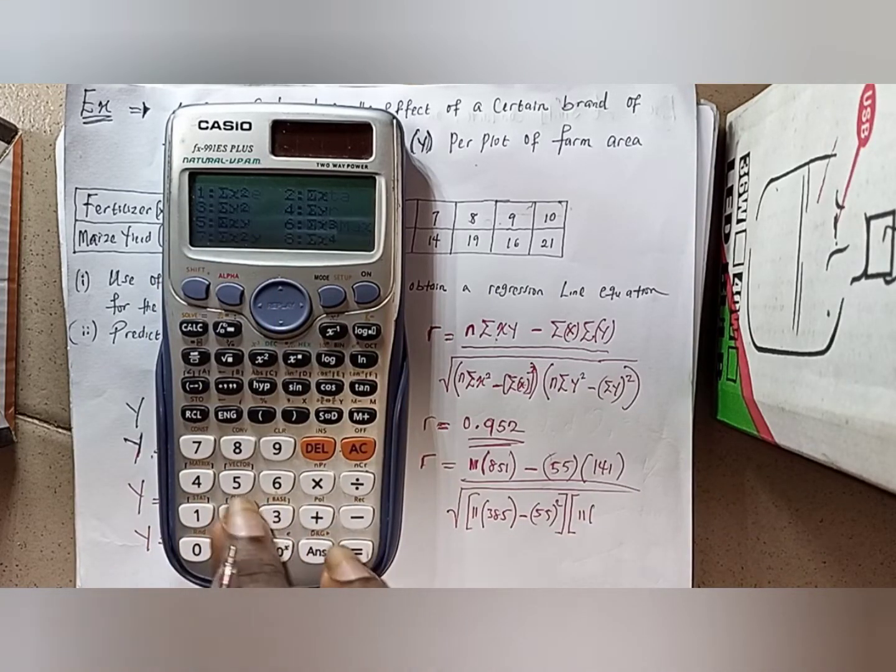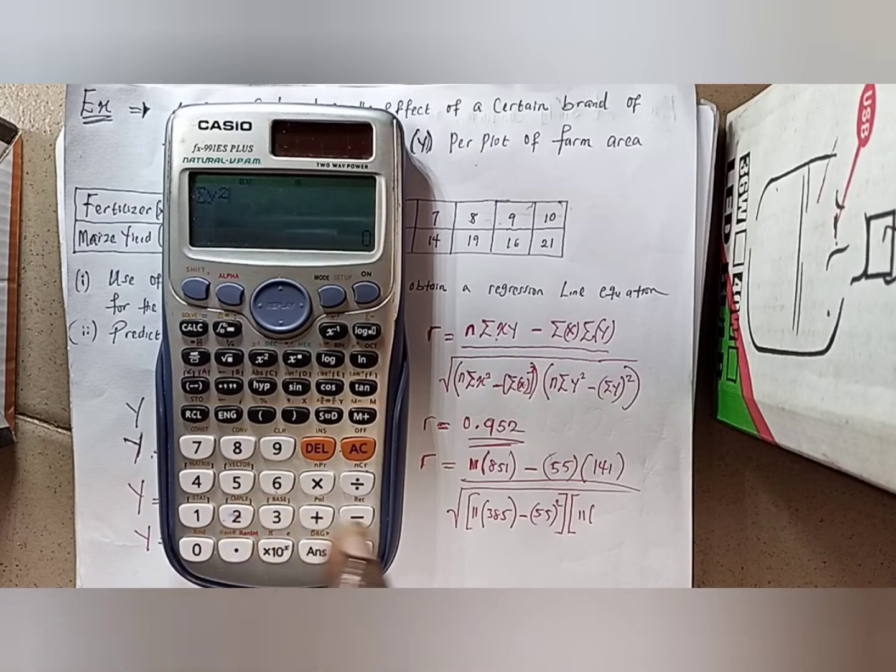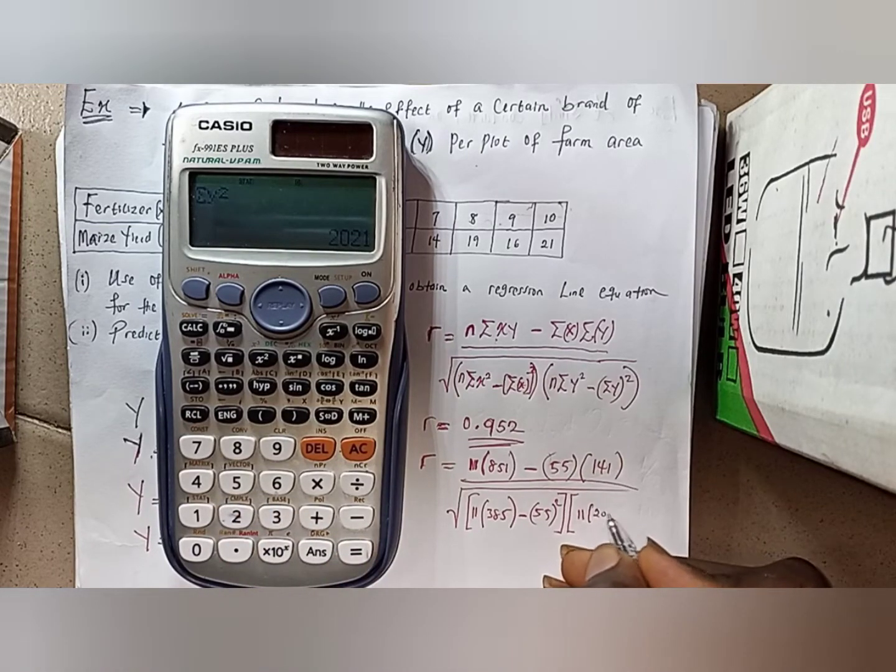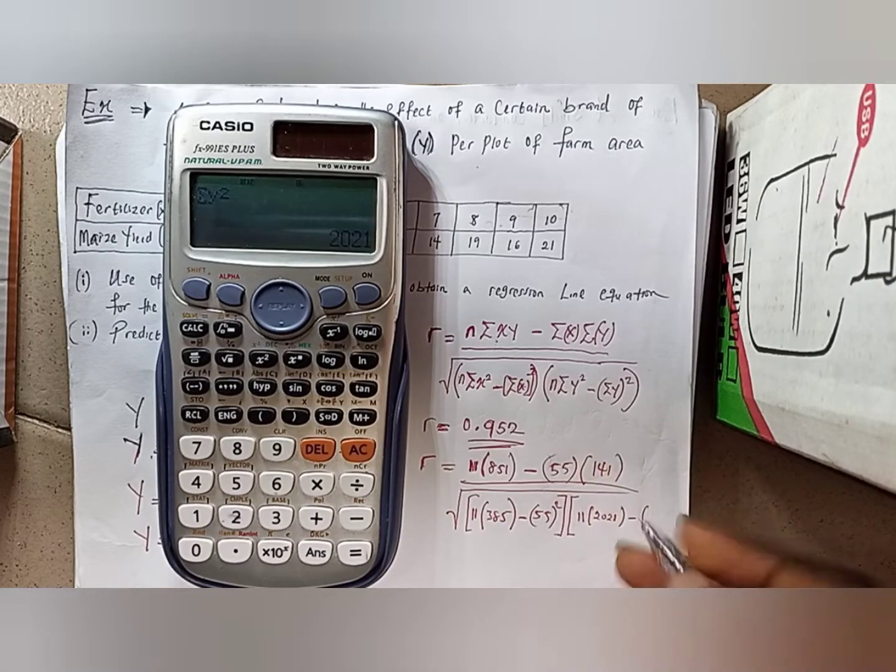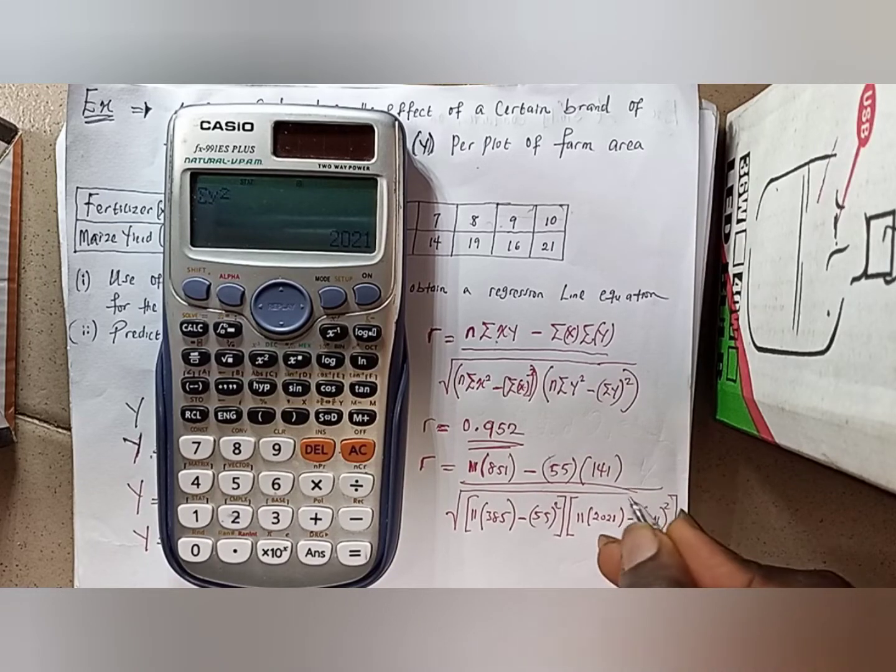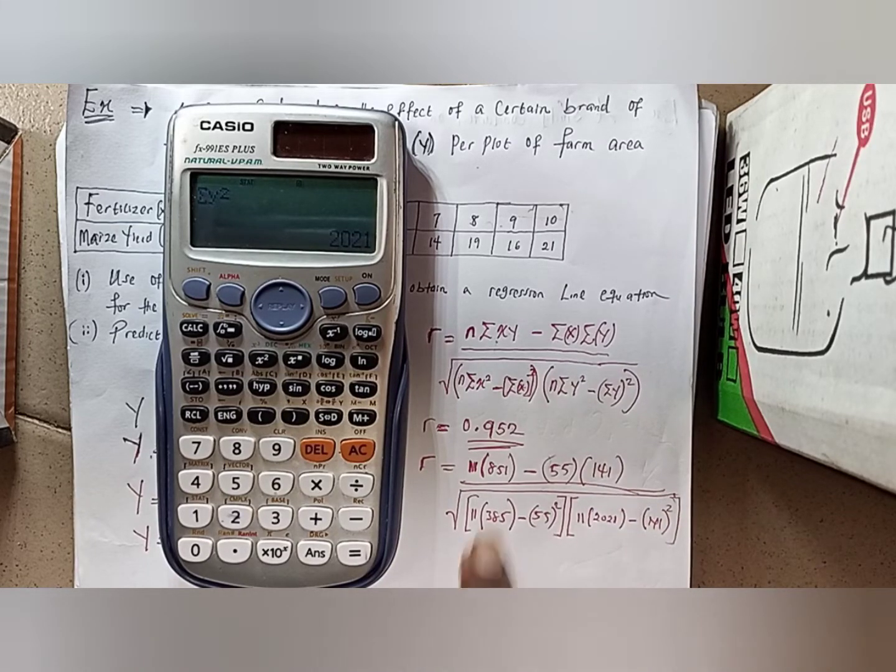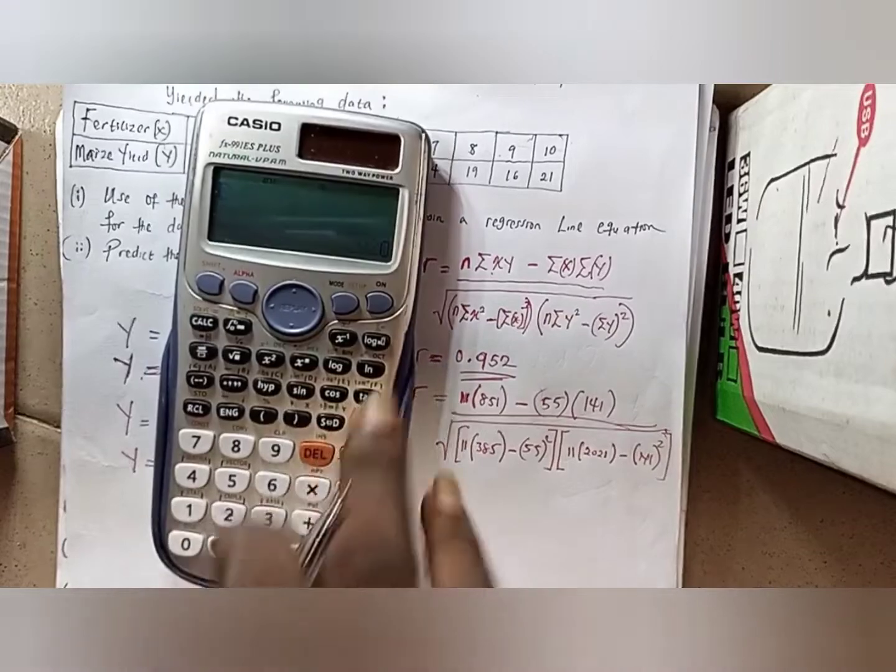Now for the second bracket I have 11, summation y squared. I don't have it before, so shift, 1, 3, then summation y squared is on number 3. Press equal to, then I have 2021, minus I have summation y to be 141 earlier, then you square it, and then you close the bracket.